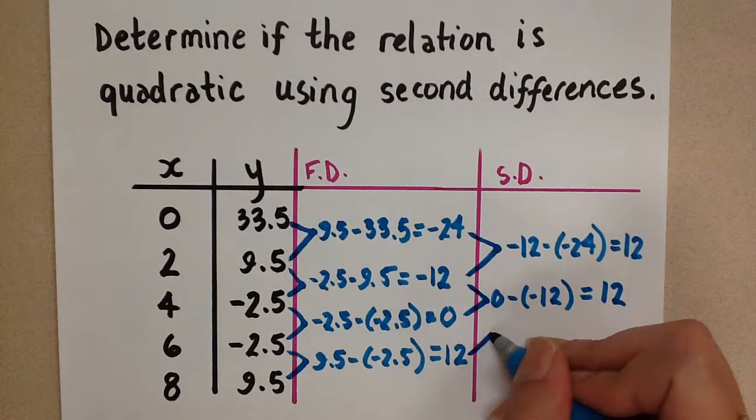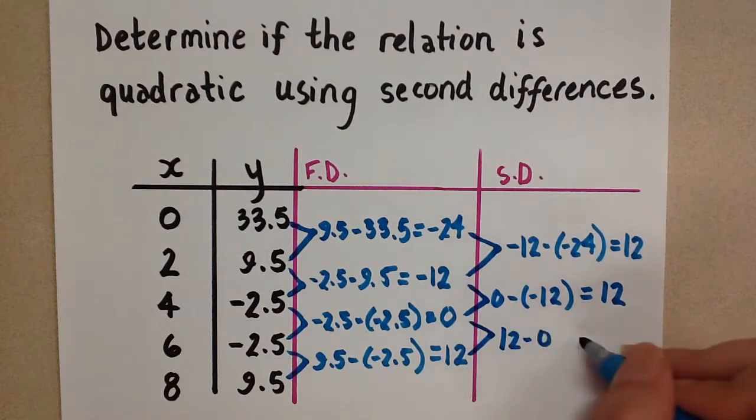And finally, 12 minus 0. And when we subtract those, we get 12 once again.